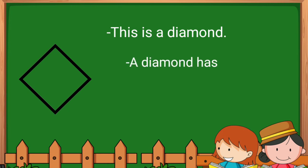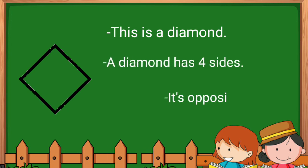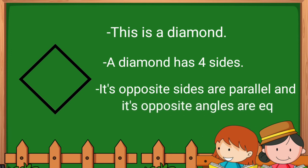A diamond has 4 sides. Its opposite sides are parallel and its opposite angles are equal.